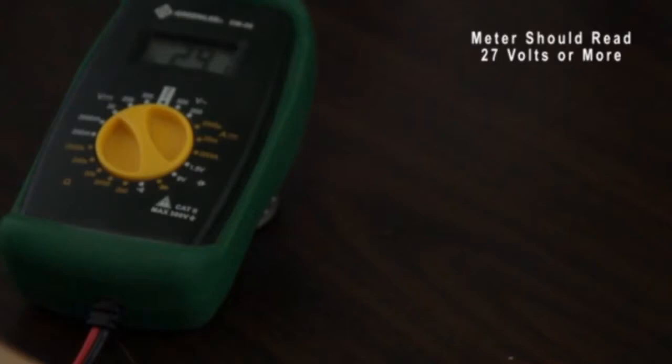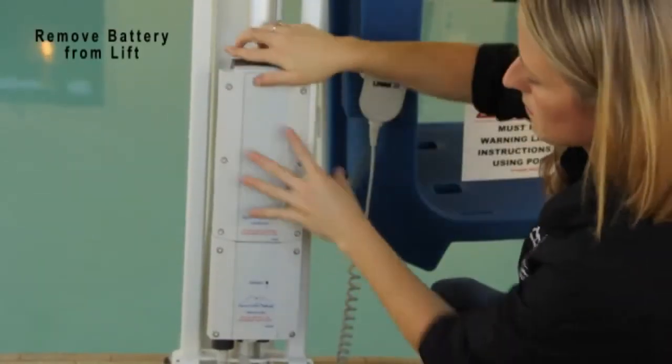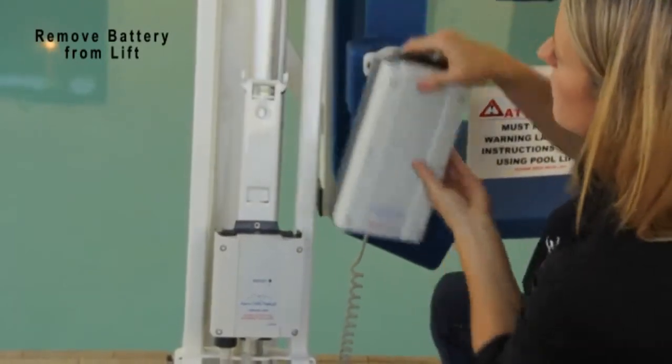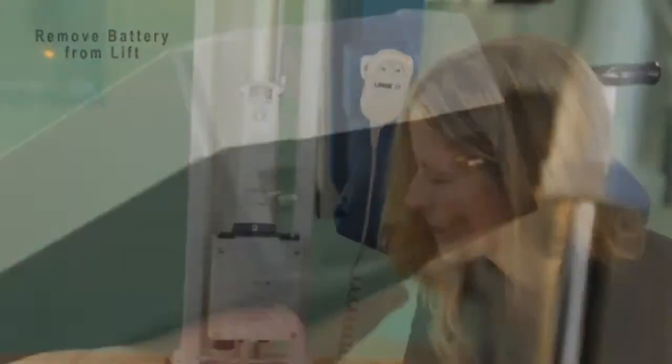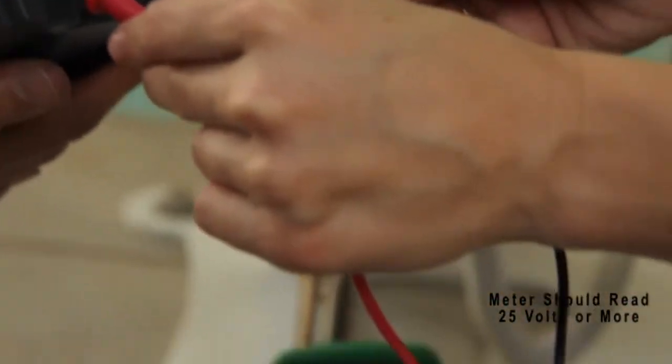If your charger has proper voltage and your lift still doesn't work, you will need to check the battery voltage. Remove the battery from your lift. Using a voltmeter or a multimeter, place the prongs on the two battery terminal tabs. A fully charged battery should read 25 volts or more.